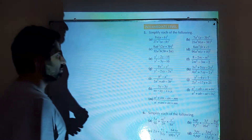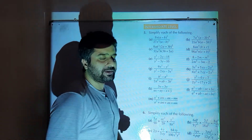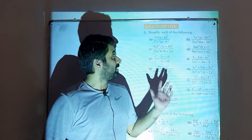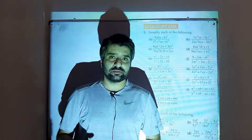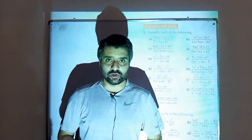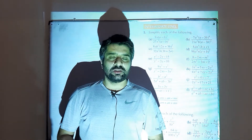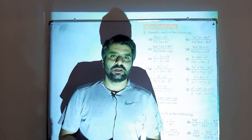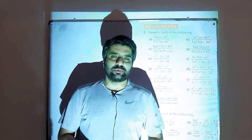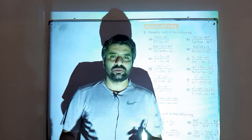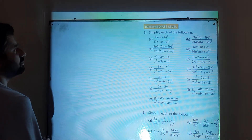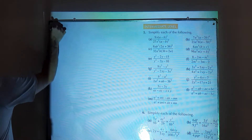Hello everyone, this is my son. In this video we are going to solve question number 5 from exercise 6a of D to 7th edition. This is simplification of algebraic expressions; we need to do factorization. We will perform operations regarding simplification, so let's start from question number 5.